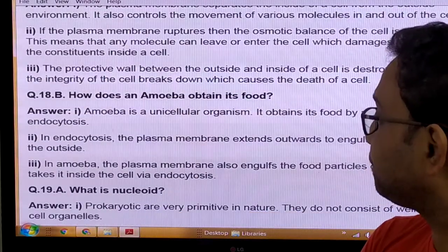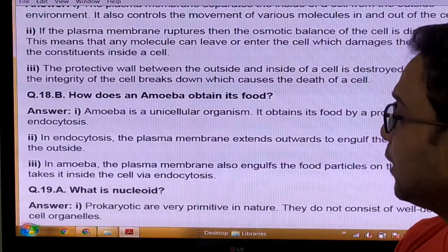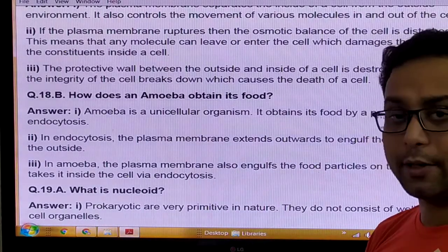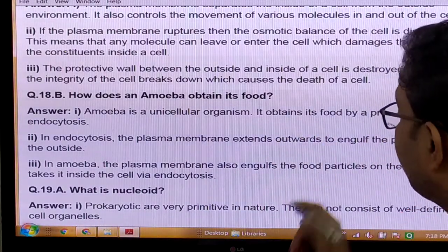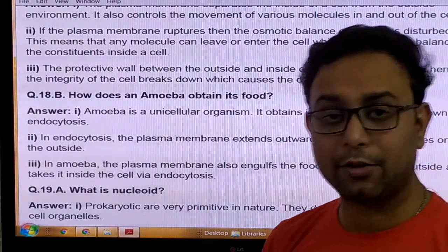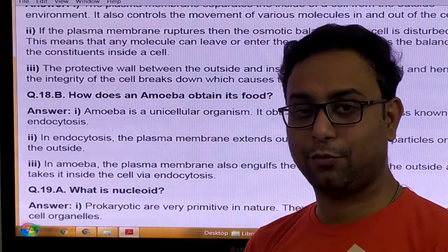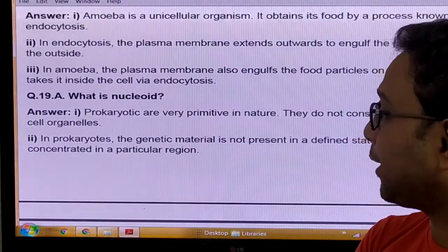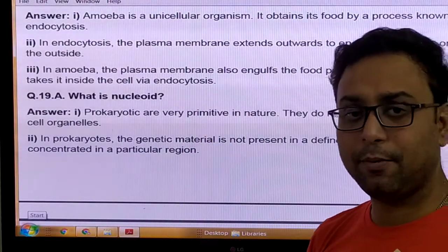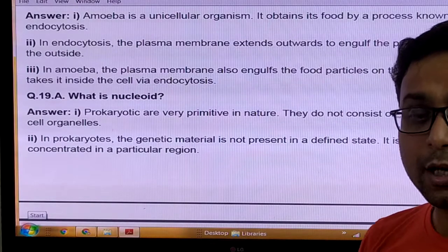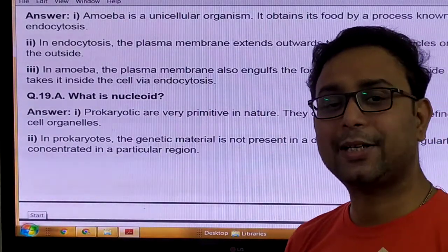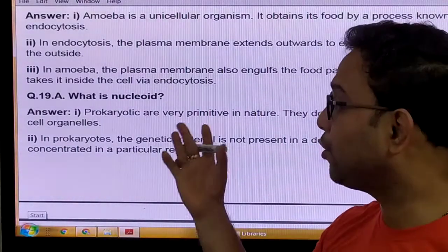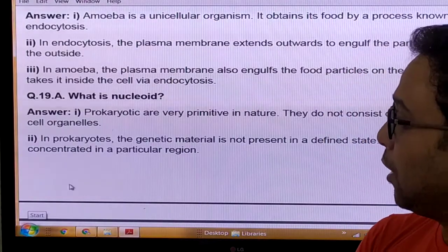Question: How does amoeba obtain food? Amoeba is a unicellular organism that obtains food by the process of endocytosis — it engulfs the food. What is the nucleoid? In the prokaryotic system, the nucleus is not present, so DNA material is scattered in the cytoplasm. That region is called the nucleoid.